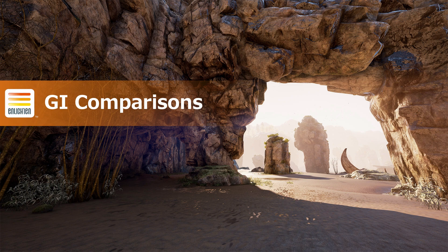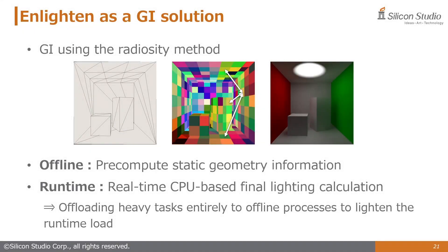Let's take a look at Enlighten when compared to other global illumination solutions. Enlighten calculates global illumination based on the radiosity method, dividing processing into two main phases. The first phase, precompute, analyzes information from static geometry in advance, partitioning the scene into patches, placing probes, and calculating form factors. The second phase, runtime, asynchronously calculates the final light propagation on the CPU using the information generated during precompute along with data about lights and materials. This separation of phases allows heavy computations to be entirely processed in advance, resulting in a cheaper runtime cost.